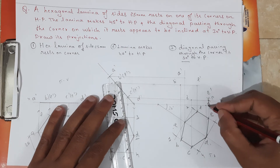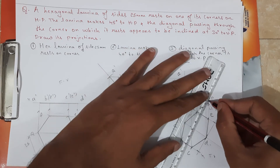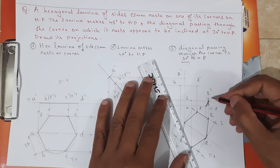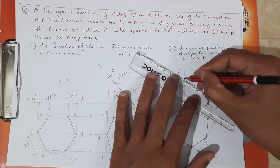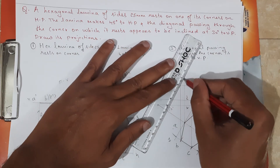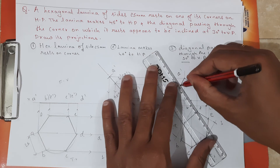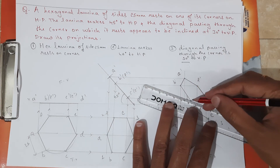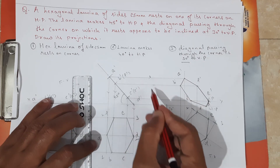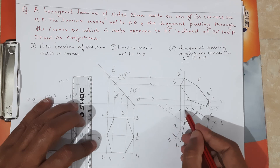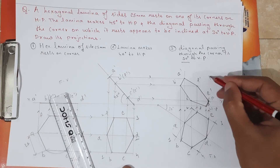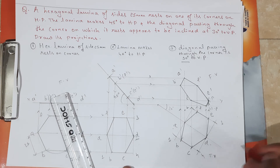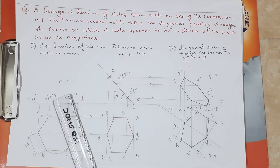Now join from D-dash to C-dash, D-dash to E-dash, E-dash to F-dash, F-dash to A-dash, A-dash to B-dash, B-dash to C-dash, and back to D-dash. Mention the arrow marks for the projections drawn upward. This is the final front view and final top view, which satisfies all three conditions. Thank you, namaste.